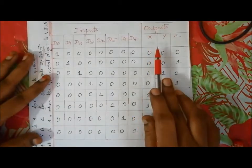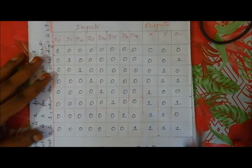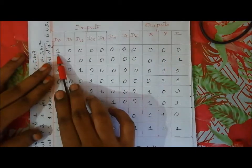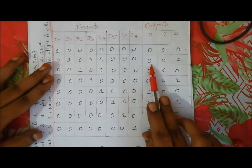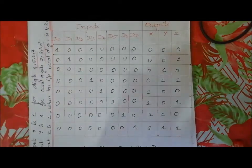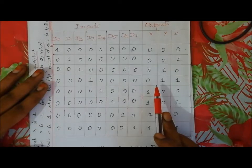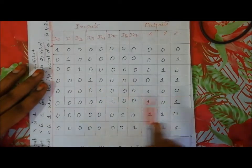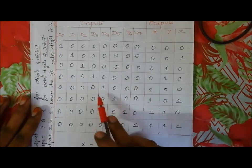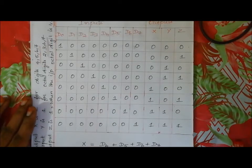In the truth table, the output lines go through combinations from 0 0 0 up to 1 1 1. This is the reverse process of the decoder truth table. For example: 0 1 0 corresponds to D2, 0 1 1 to D3, 1 0 0 to D4, 1 0 1 to D5, 1 1 0 to D6, and 1 1 1 to D7.